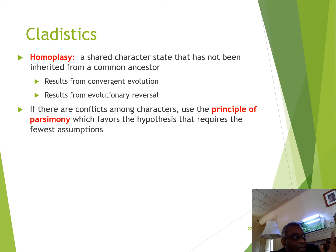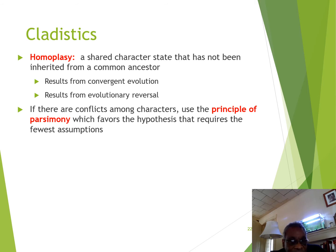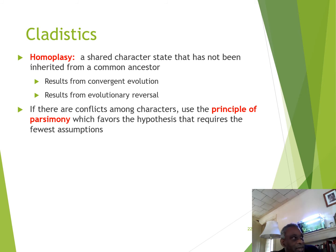When you have conflicts among character states in building your phylogenetic relationship, use the principle of parsimony, which favors the hypothesis that requires the fewest assumptions. You don't need to get very elaborate — just use the simplest relationship to determine what the evolutionary relationships are.